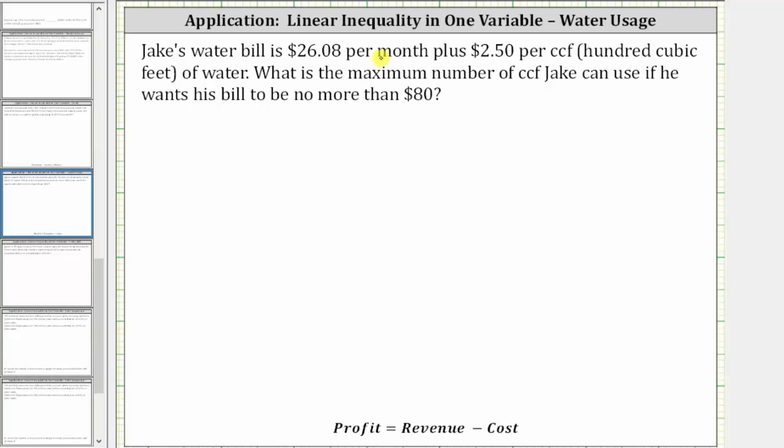Jake's water bill is $26.08 per month, plus $2.50 per CCF, where a CCF is 100 cubic feet of water. What is the maximum number of CCFs Jake can use if he wants his water bill to be no more than $80?